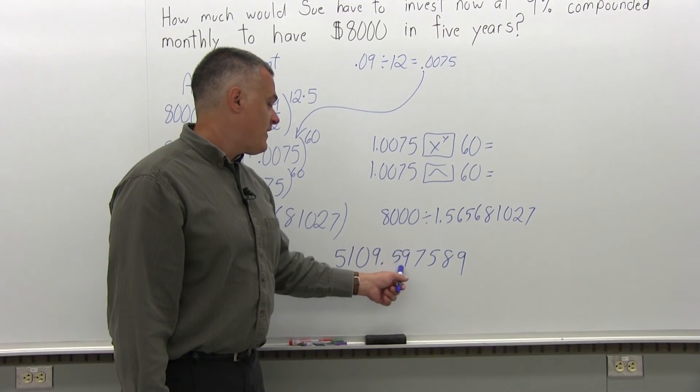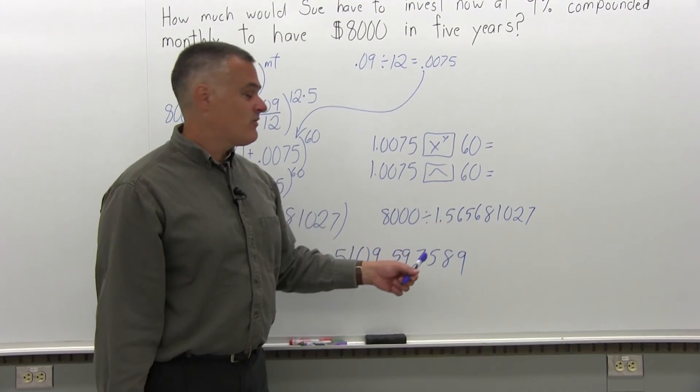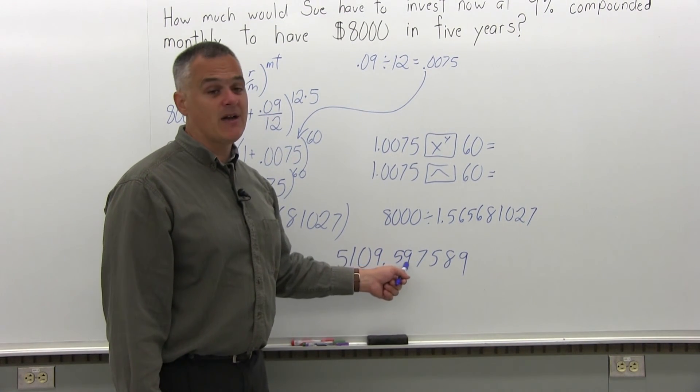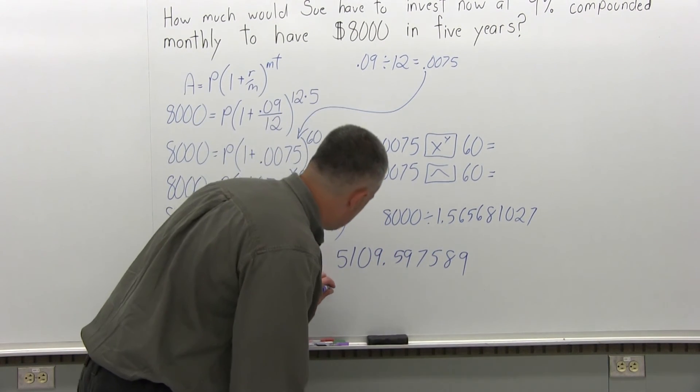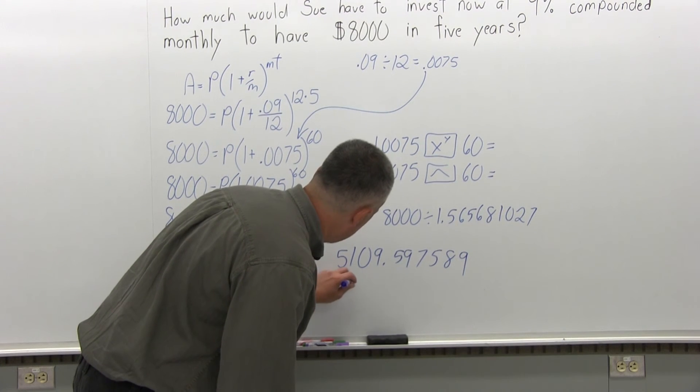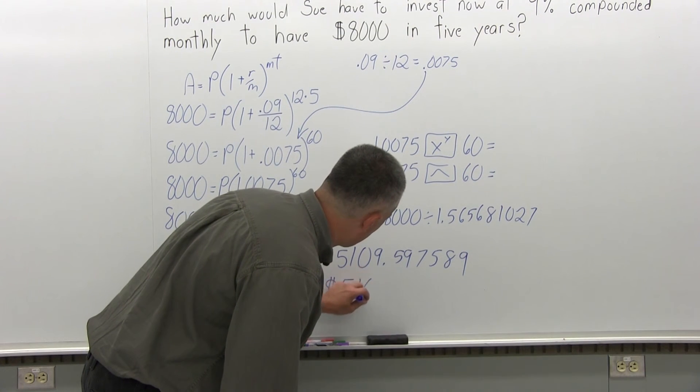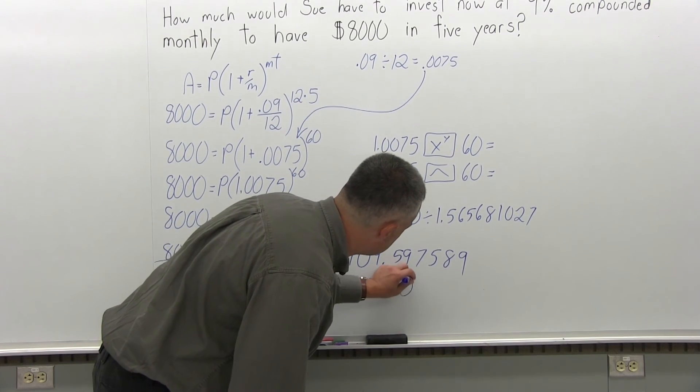So after the decimal, I have .597 and then some other stuff. Well, the 7 is big enough to make that 5.9 into 60 cents. So my final answer will be $5,109.60.